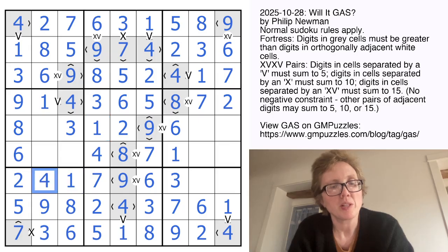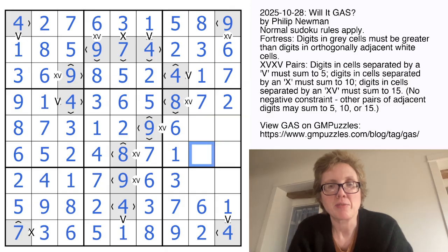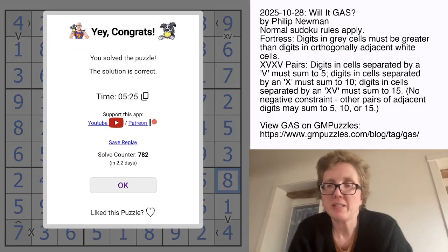These are going to be 1 and 4. And here I need 2, 5, and 7. And I need 3 and 6 to finish off this row. Not 3 and 6, 3 and something else. 3 and 9 to finish off this row. And I need a 4 and a 5 like that. And 5 and 8 to finish the grid. And that is how you solve Philip Newman's Will It Gas.